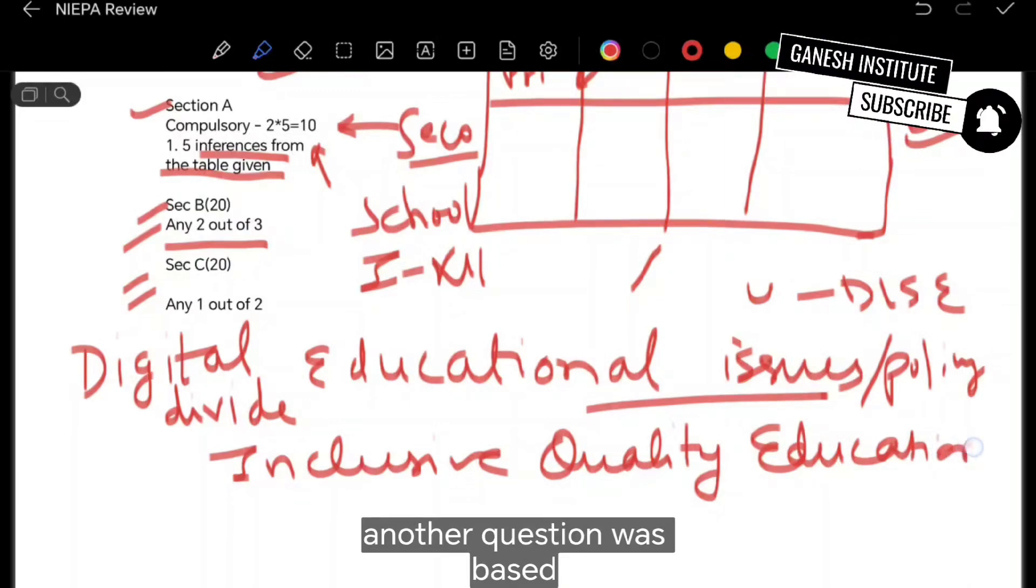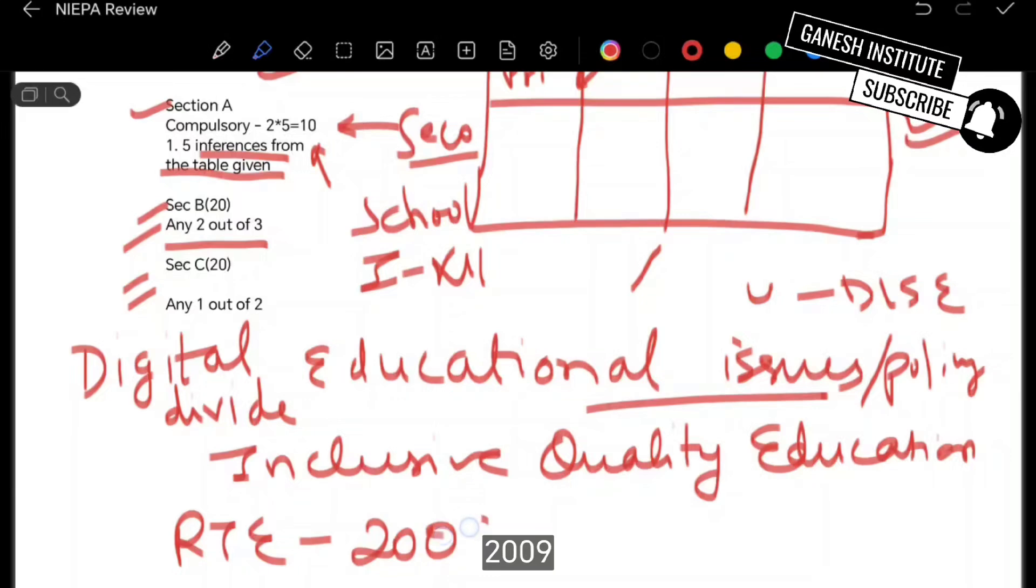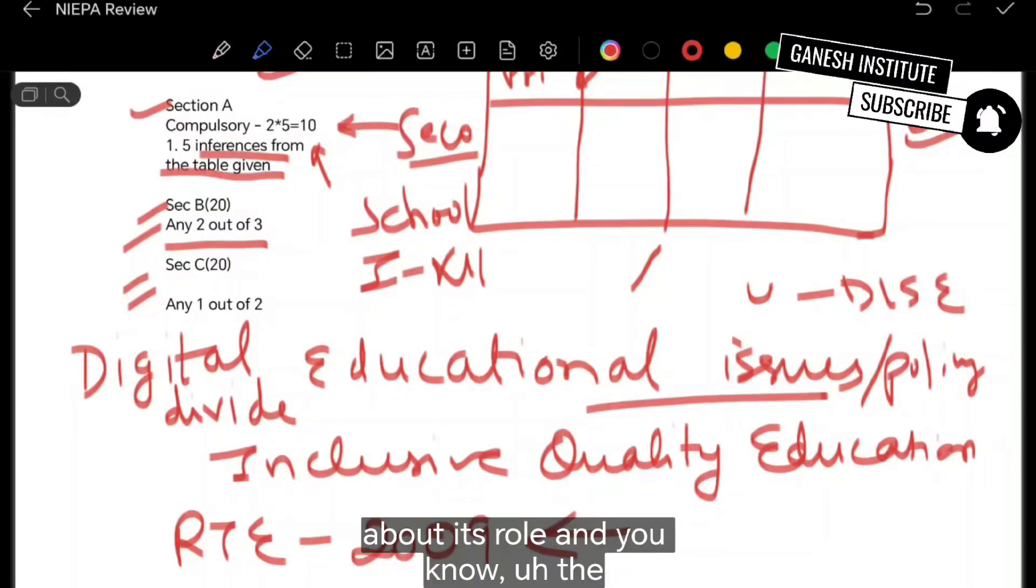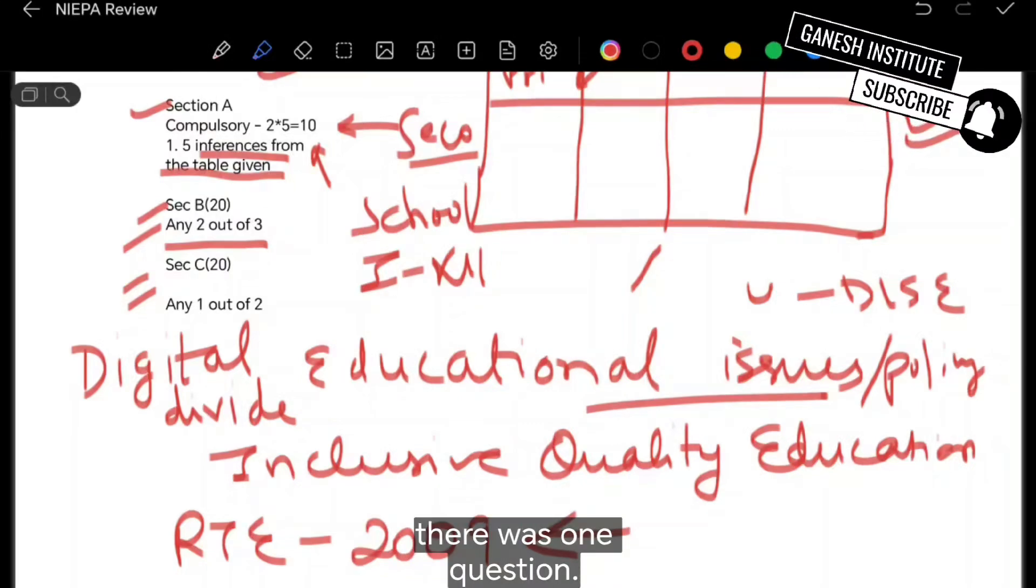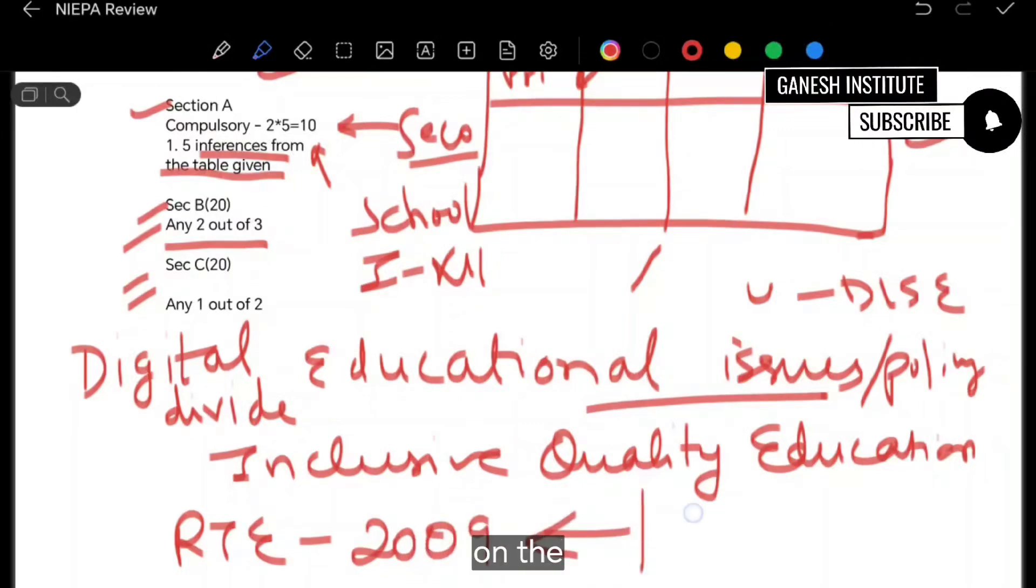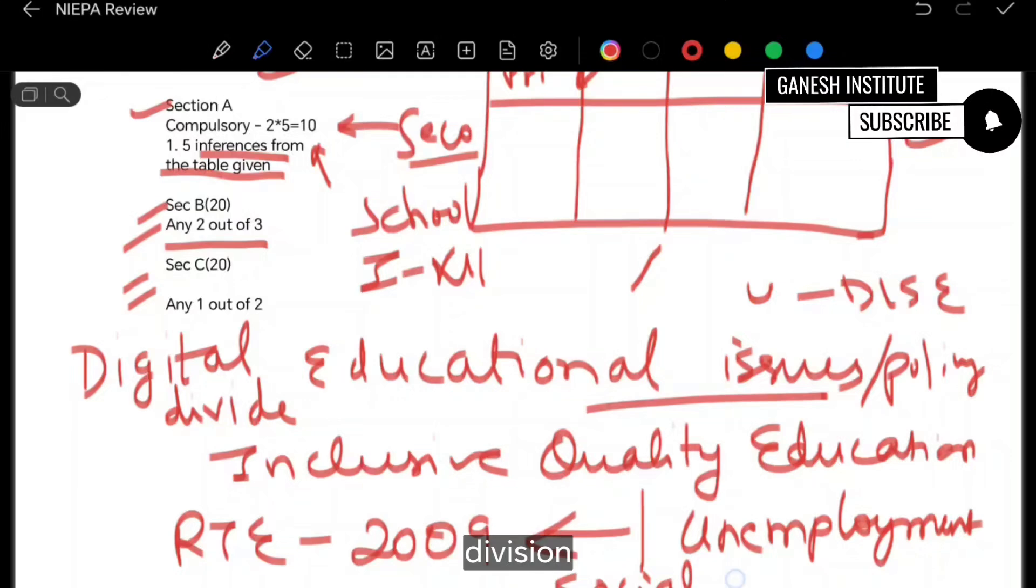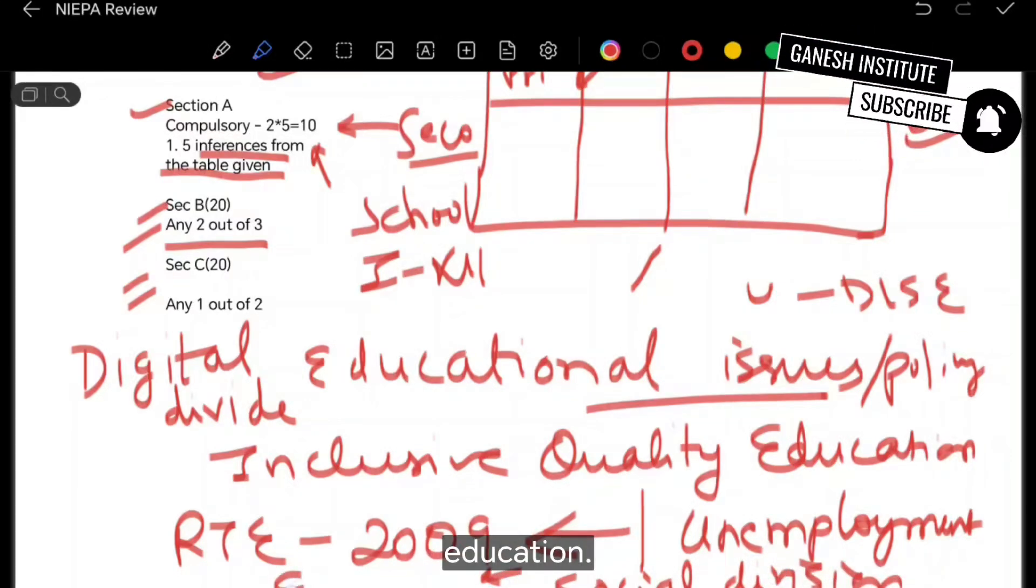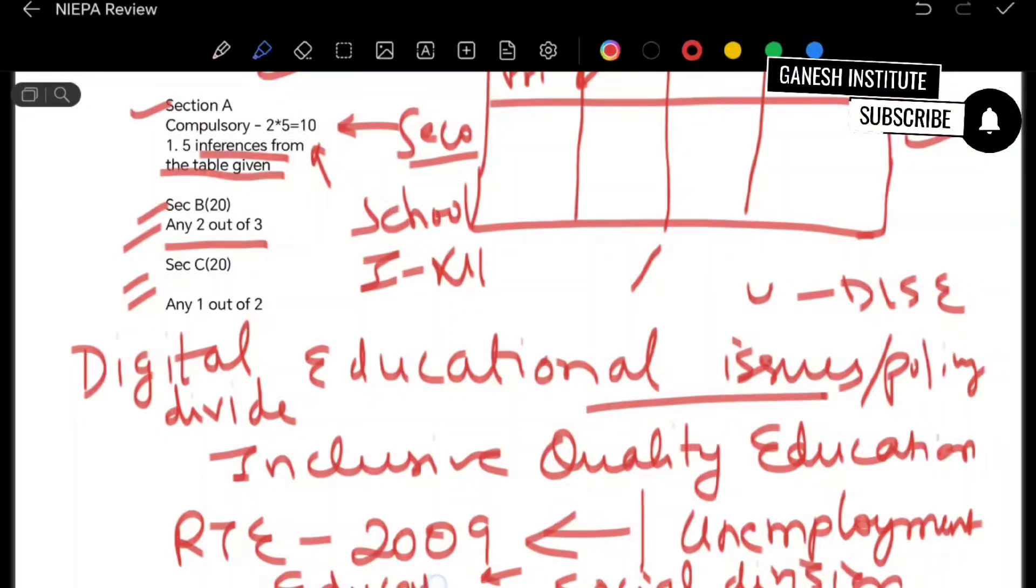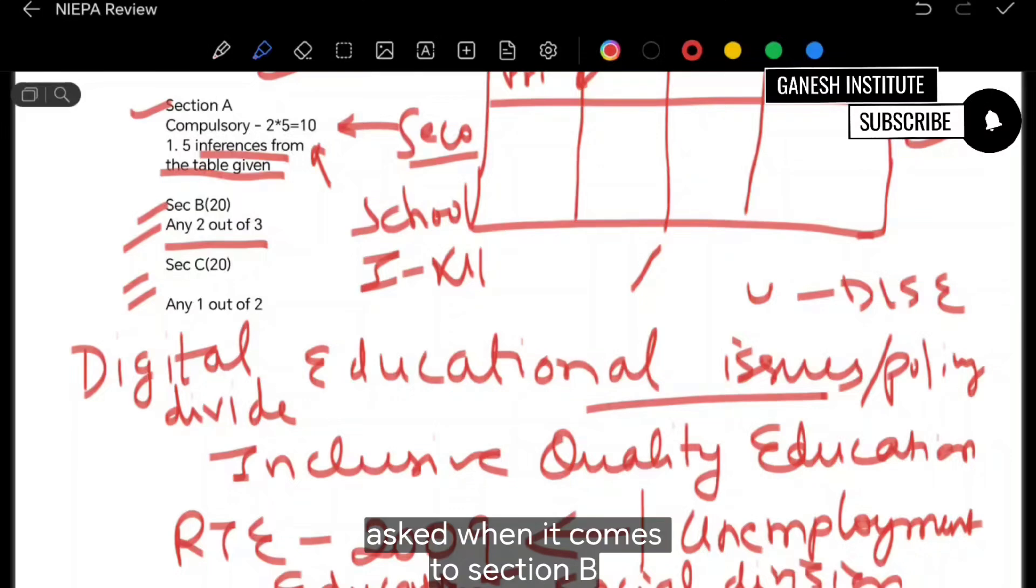Then another question was based on Right to Education Act 2009, about its role and the ground reality and everything. Then there was one question based on unemployment and social division, its impact on education. So such sort of questions are asked when it comes to section B and C.